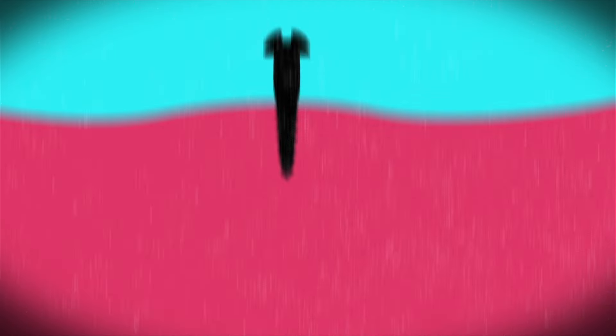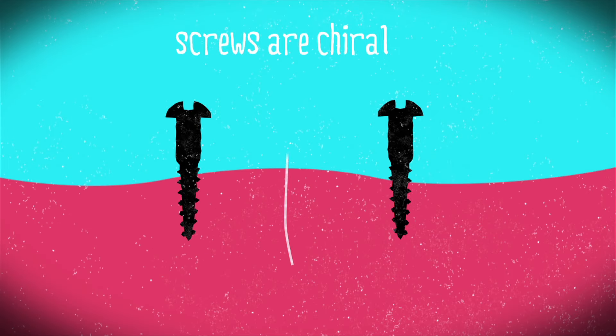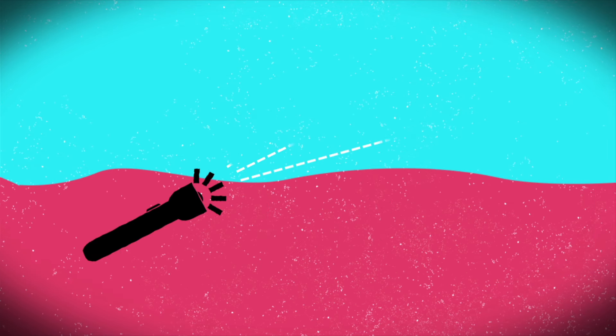Screws, for example, are also chiral. That's why we need the terms right-handed and left-handed screws. And believe it or not, certain types of light can behave like chiral screws.